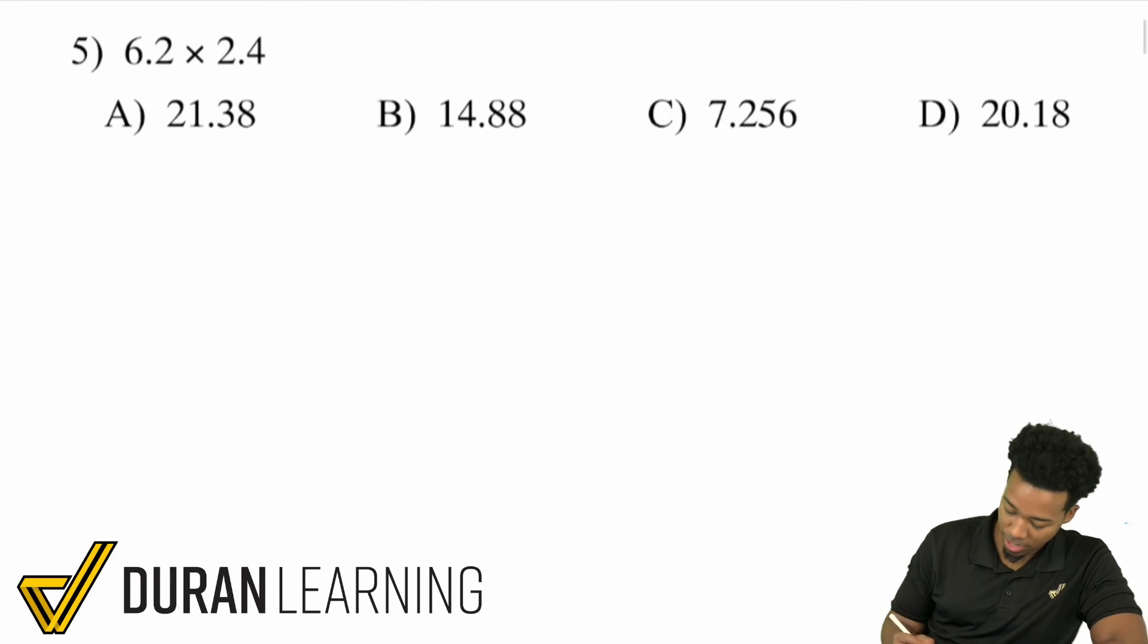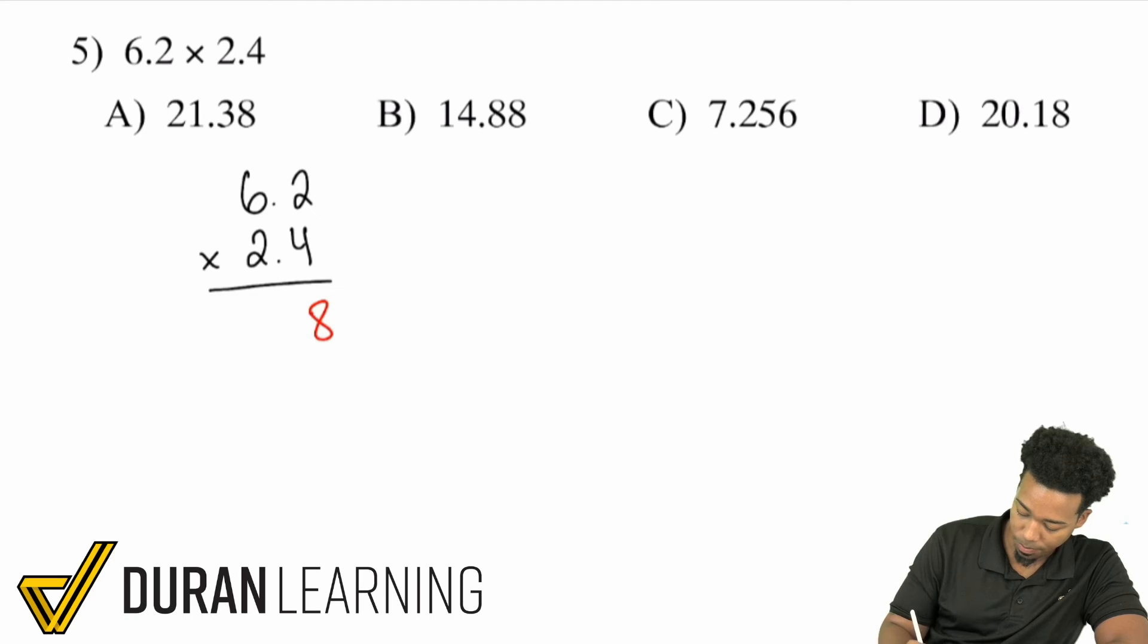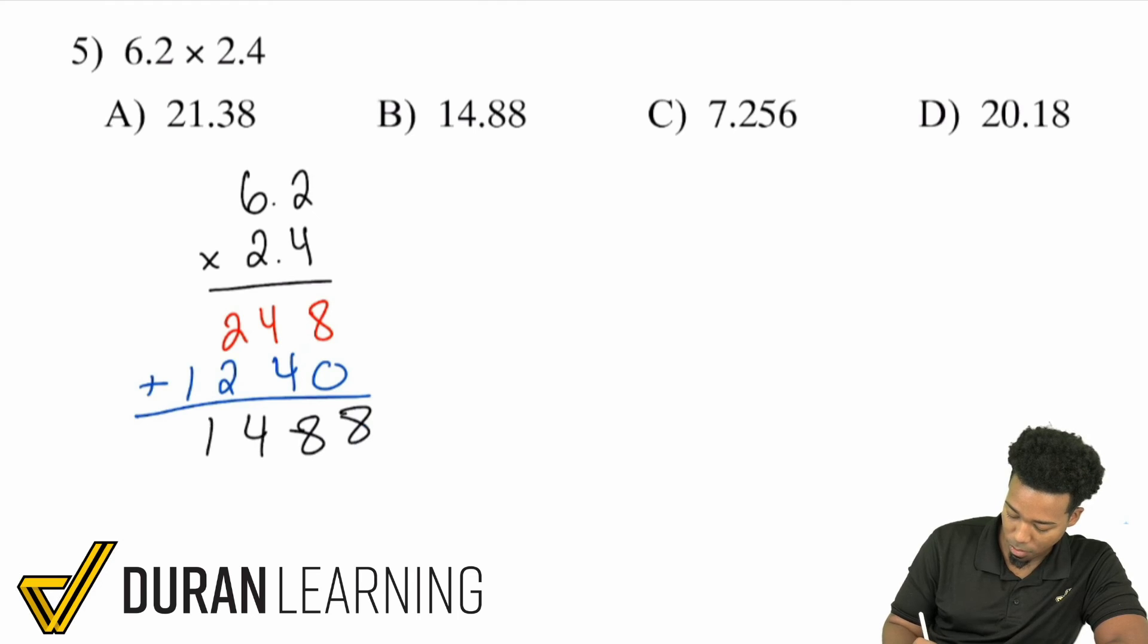6.2 times 2.4. So here we go, 6.2 multiplied by 2.4. Let's get started. Two times four is 8, six times four is 24. Up next, bring a zero down. Two times two is 4, six times two is 12. So from there we've got 8, 8, 4, and 1.